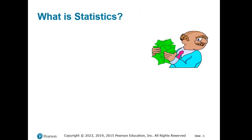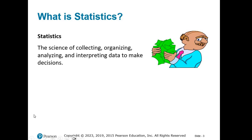The most important and perhaps most obvious question to ask here at the beginning is: what exactly is statistics? Statistics is a science of collecting, organizing, analyzing, and interpreting data to make decisions. You can think of this definition almost like a large wheel, with each of these action words as a spoke or rung of that wheel. They each play a key role in the process to keep it moving.